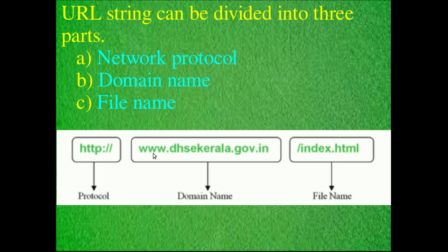For example, www.dhsekeralа.gov.in — here 'dhse kerala' is the domain name with subdomains. 'gov' means government and 'in' means India, so it is an Indian government agency site. 'www' means World Wide Web. The URL has three parts: protocol, domain name, and file name. The file name gives access to a specific page of the DHSE Kerala website.